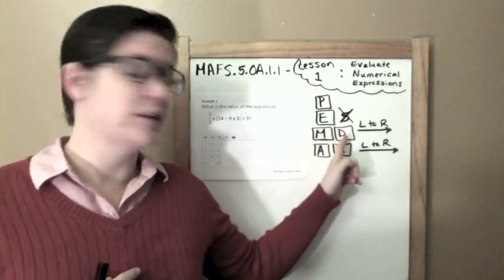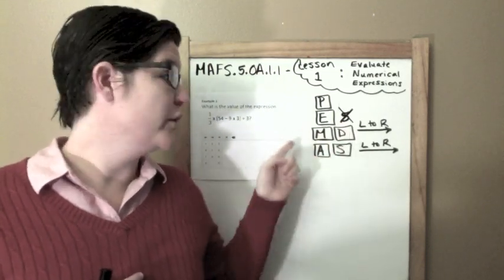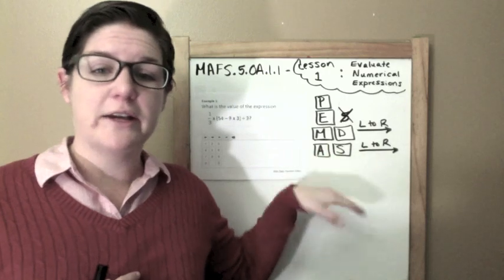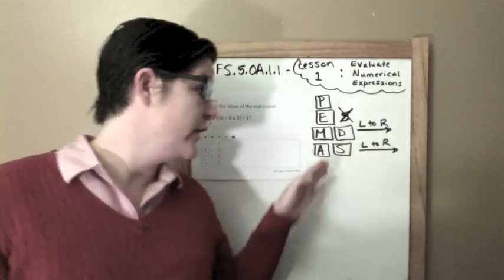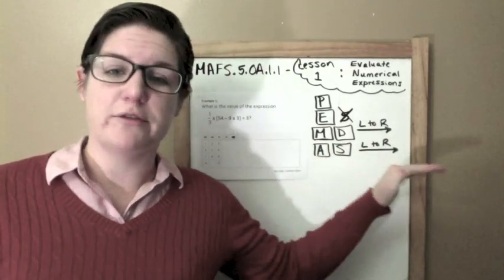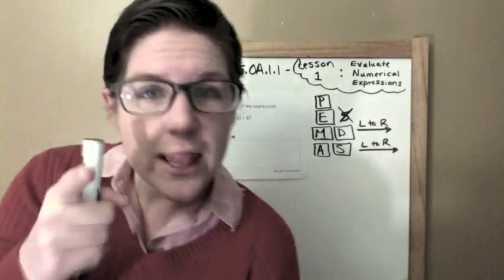Then we have multiplication and division. And when we're solving, we go from left to right. And then our next step would be to solve addition and subtraction. And again, once you get to that step, you're going from left to right. So let me teach you.